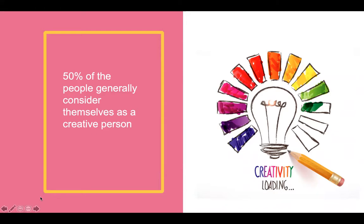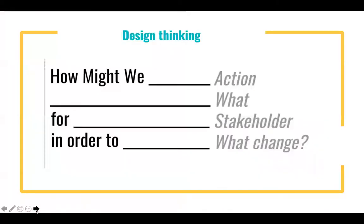The second question we asked: what is a 'how might we' question? A 'how might we' question is a way of framing — of saying what actually needs to be done — and turning a problem into opportunities for design. So I'll give you an example: teenage girls need to eat nutritious food in order to thrive and grow in a healthy way. We might think about what healthy eating options there are, or how we can make food more affordable.